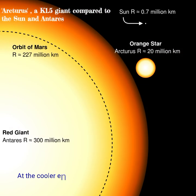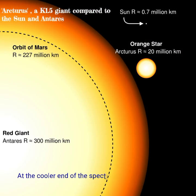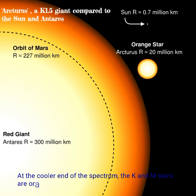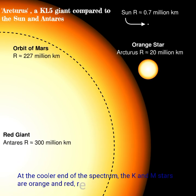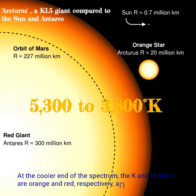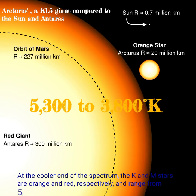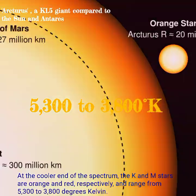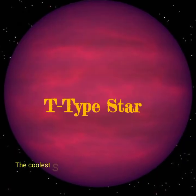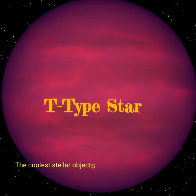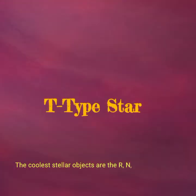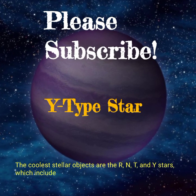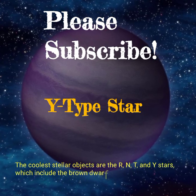At the cooler end of the spectrum, the K and M stars are orange and red, respectively, and range from 5,300 to 3,800 degrees Kelvin. The coolest stellar objects are the R, N, T, and Y stars, which include the brown dwarfs.